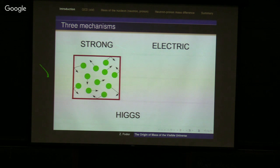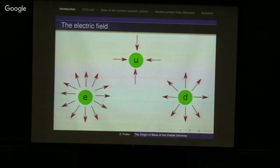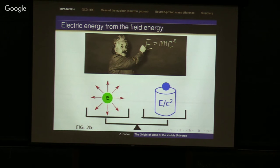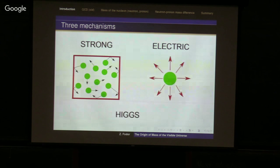We have dealt with the strong interaction. Then we have the electric interaction, and you have to remember that all these particles have electric charges. That means electric fields. Electric fields mean energy. And this energy can be interpreted, again, as mass. So we have a nice illustration for the mass coming from the electromagnetic interaction.